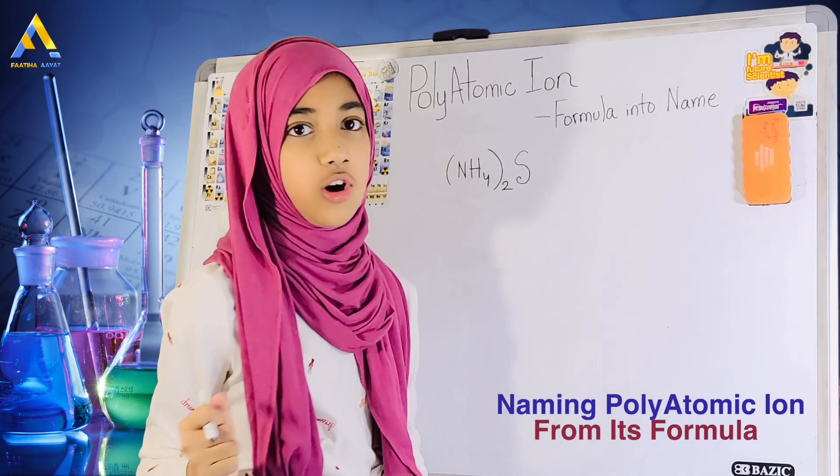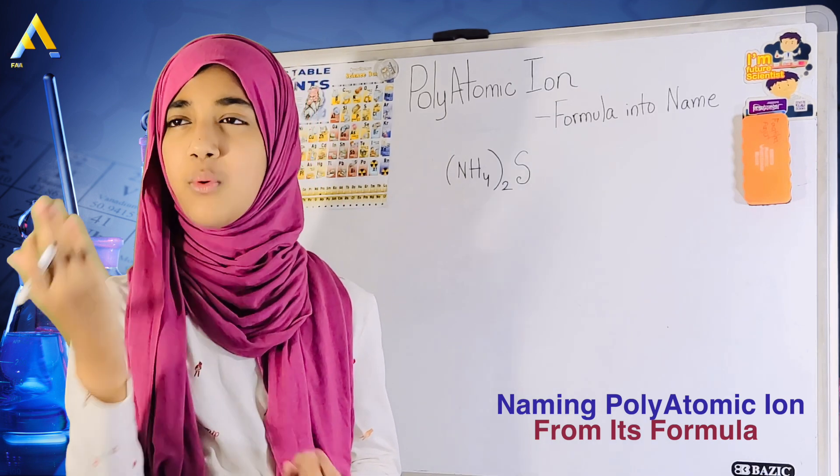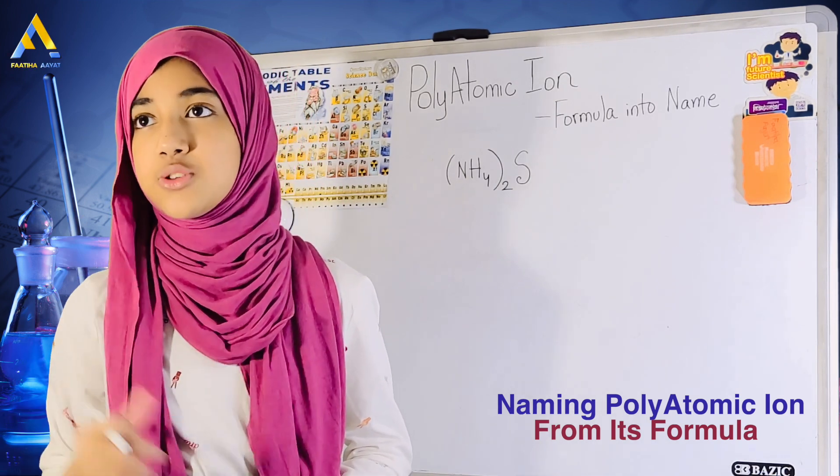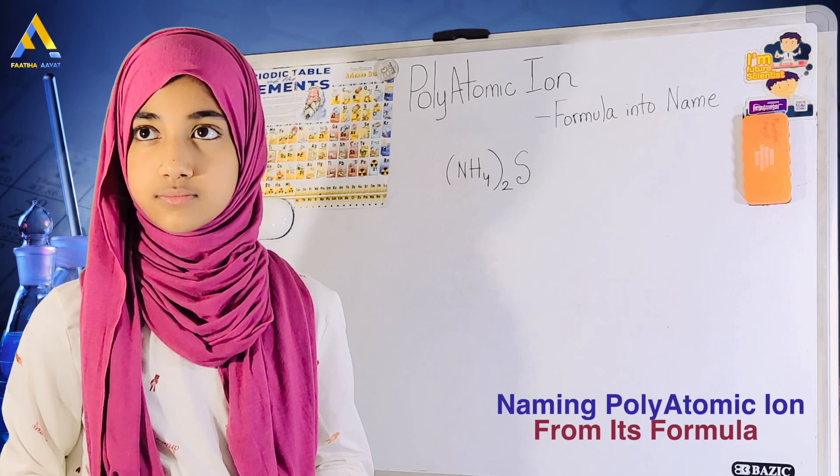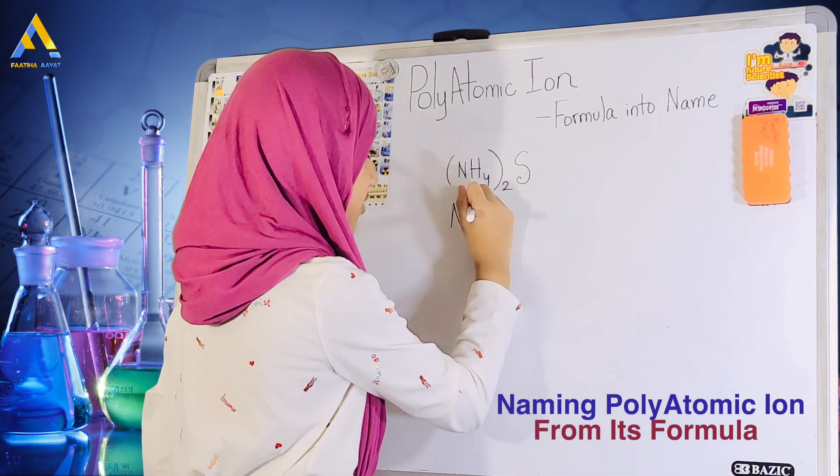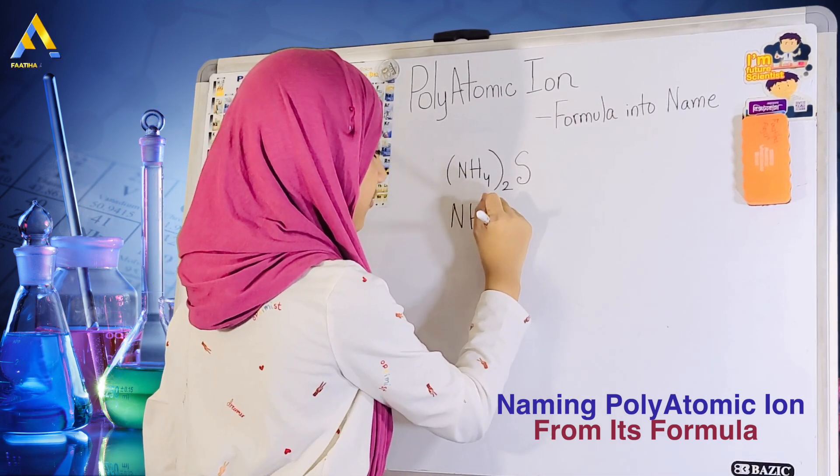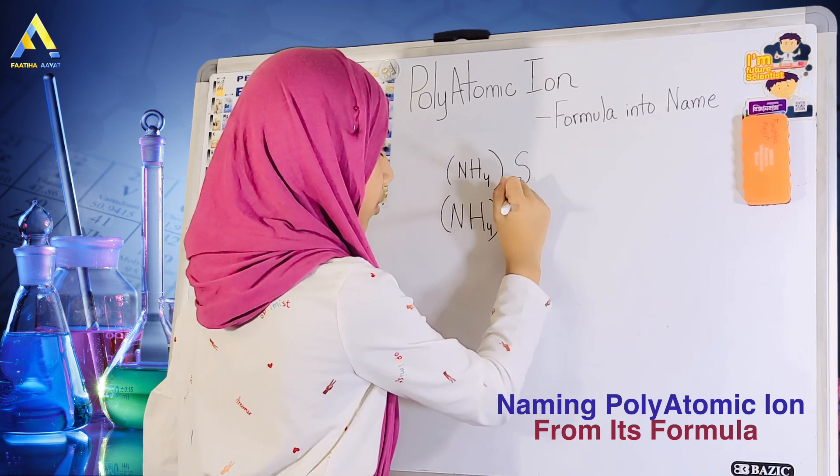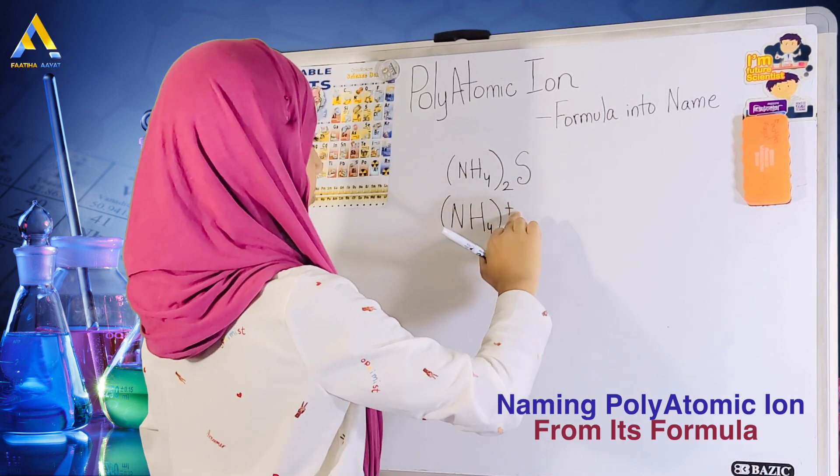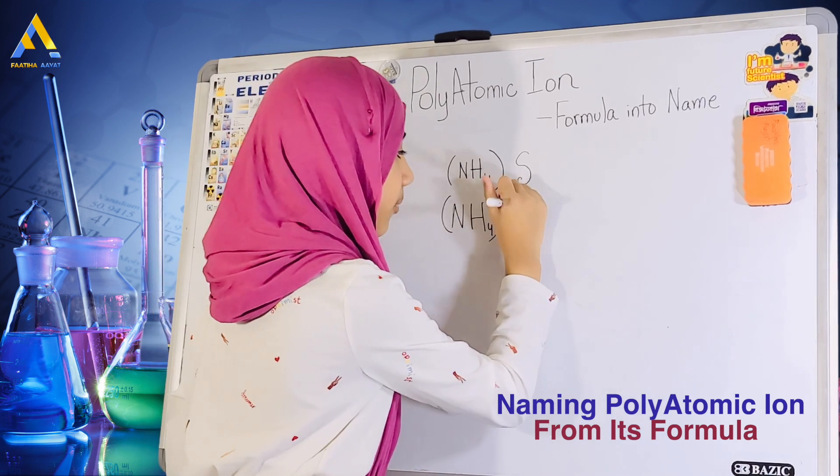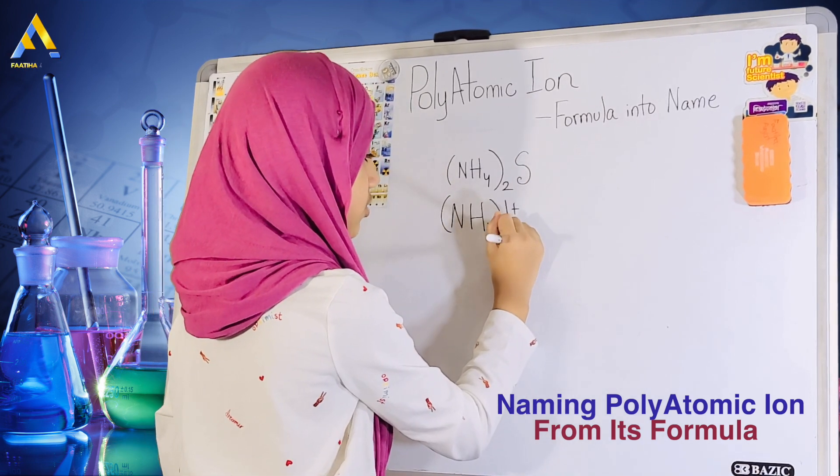I know that NH4 means ammonium. But, Baba, what's the charge for ammonium? What's the magnitude? It always carries one positive charge. One plus. Okay. Thank you. Thank you. So, we would write that as NH4, plus one. One plus. And then there's two atoms of that.